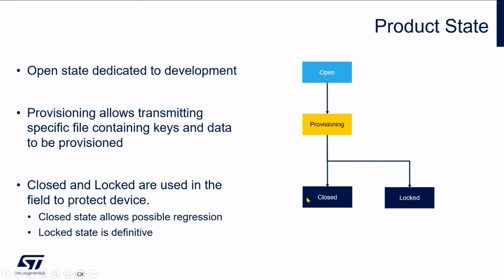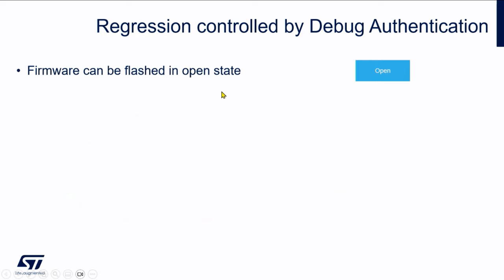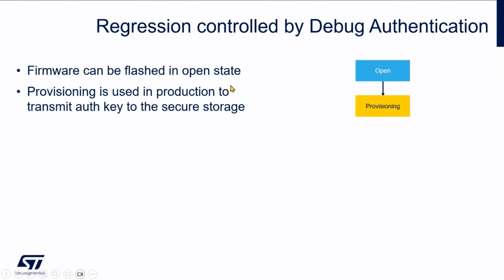The key difference from RDP level 1 is that in the closed state, you no longer have any debug interface available. So this is an improvement in terms of security. The regression is now controlled by the debug authentication mechanism.